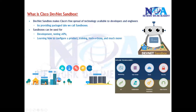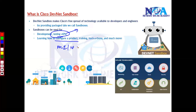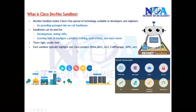The sandboxes are used for developing automation software, testing APIs to see how they behave, or configuring specific products like Cisco ACI for data center automation, wireless LAN controllers, or Cisco DNA. You can also use them for training, remote access, and hackathons — where programmers work in groups to create functional software. It is totally free, and each sandbox highlights a different Cisco product.